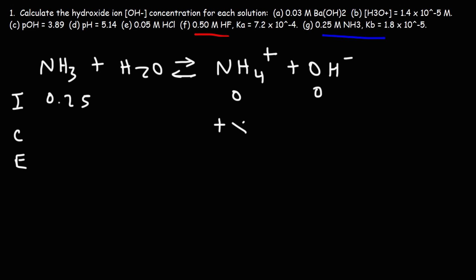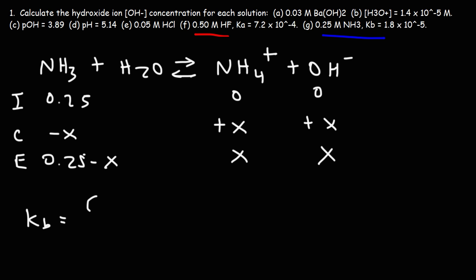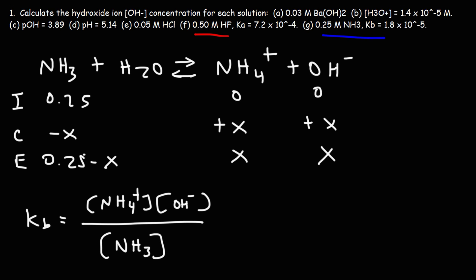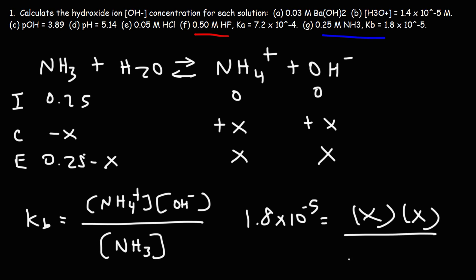We'll make an ICE table like before. The initial concentration of ammonia is 0.25 M and the products start at zero, so the reaction shifts right — products increase by X and reactants decrease by X. At equilibrium NH₃ is 0.25 minus X. The base dissociation constant Kb equals the concentration of NH₄⁺ times OH⁻ divided by NH₃. Water is liquid so it's not included. Kb is 1.8 × 10⁻⁵. Because this is a small number, we can ignore X in the denominator. Notice that X equals [OH⁻].